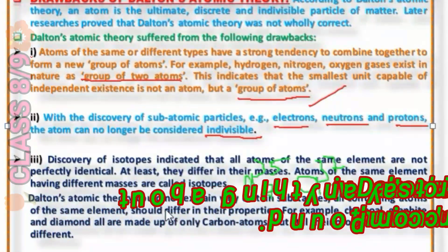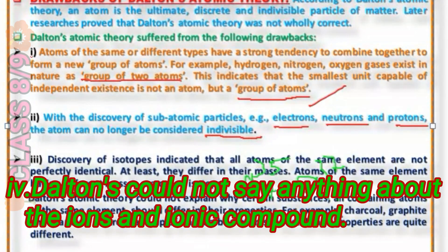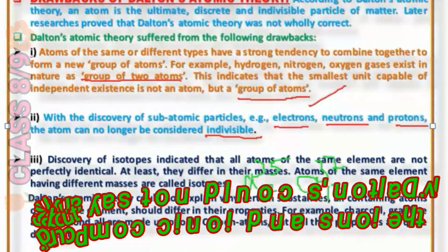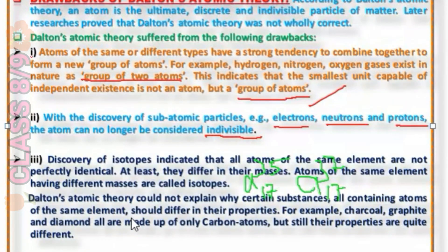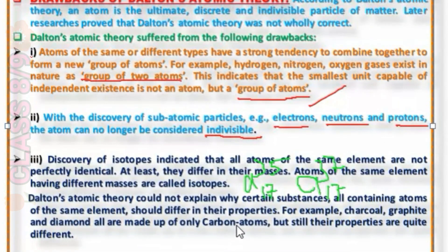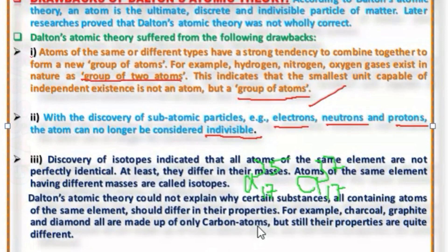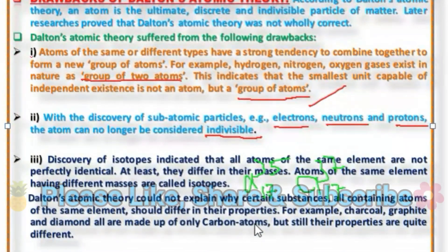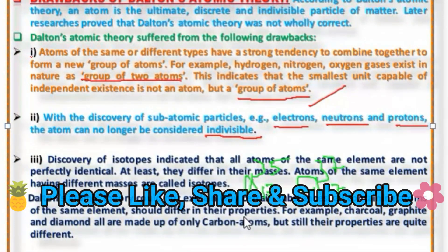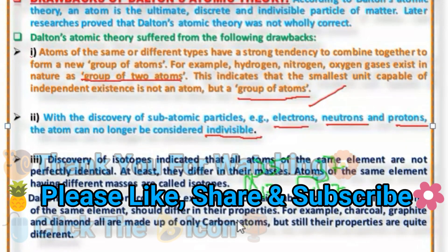Dalton atomic theory could not explain about ions and ionic compounds. So this is a big failure of Dalton atomic theory. Later, scientists came and gave their own concepts on atoms one by one, which I will discuss in more parts.